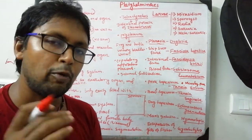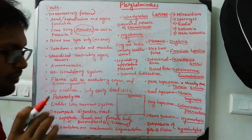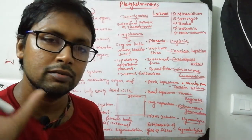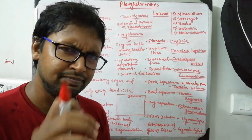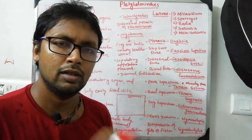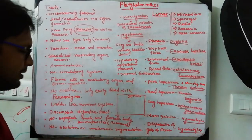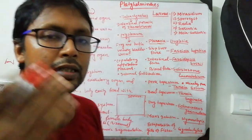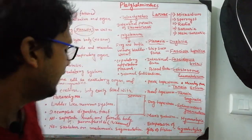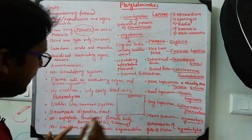No coelom - body cavity is filled with parenchyma. The ladder-like nervous system is far more developed than in Cnidarians, which had only a network type nervous system. Incomplete digestive tract - they have a mouth but no anus, so it is a blind sac type body cavity. No separate male and female bodies - they are hermaphrodites, that is bisexual.